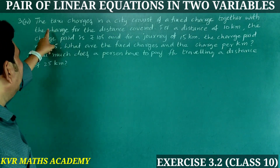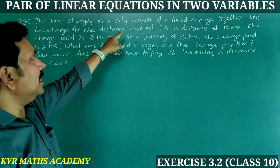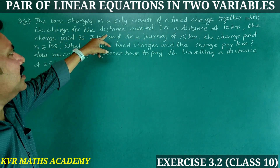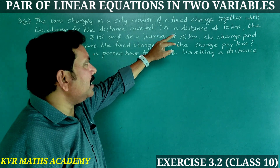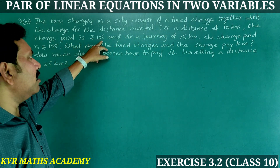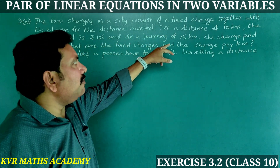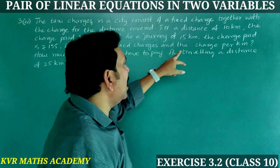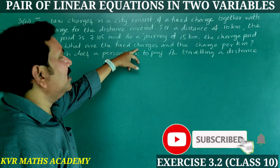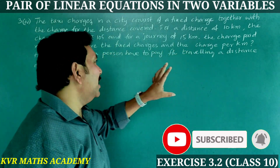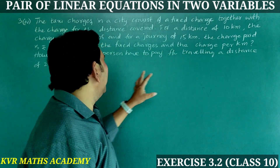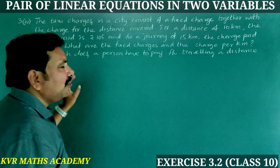Next, problem 4. The taxi charges in your city consist of a fixed charge together with the charge for the distance covered. For a distance of 10 kilometers the charge paid is Rs. 105, and for a journey of 15 kilometers the charge paid is Rs. 155. What are the fixed charges and the charge per kilometer? How much does a person have to pay for traveling a distance of 25 kilometers?